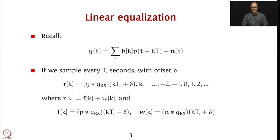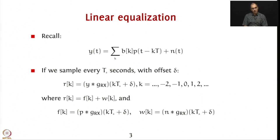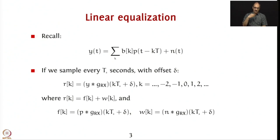Hypothetically, let us suppose that at the receiver we oversample or sample at a different rate — say we sample at Ts seconds, every Ts seconds, potentially with an offset delta as well. Then the received samples can be expressed as y convolved with g_rx(t), evaluated at k*Ts + delta, where delta is an offset between 0 and Ts. You get samples every Ts seconds apart. Ts can be equal to T or less than T; typically it is not more than T, because if it is more than T you will start missing some symbols.